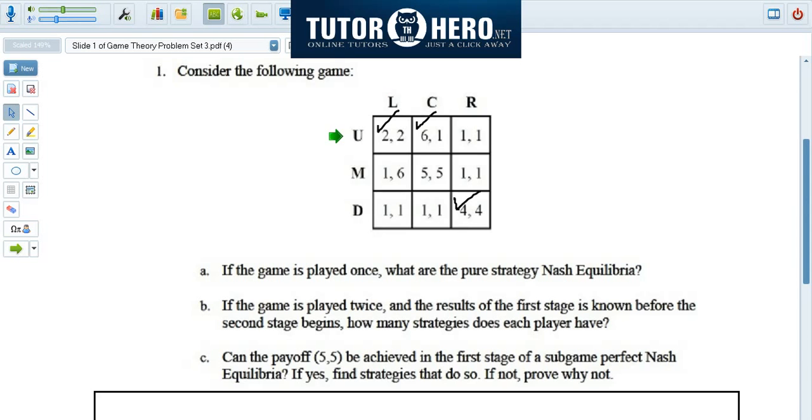We're going to say, suppose the row player chose up, what does the column player want to do? Suppose the row player chose middle, what does the column player do? Suppose the row player chose down, what does the column player want to do? In the case of up, the column player compares two to one to one, and two is best. So we put a checkmark there.